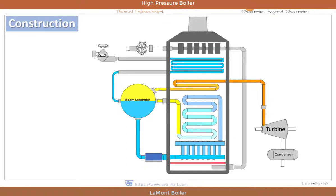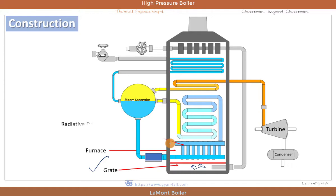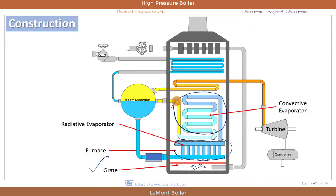Now let us understand the most important parts of the Lamont boiler. This is the grate on which the fuel is placed for burning, and the hot air is supplied from the bottom of the grate. This is the furnace where the fuel is burned and hot gas of combustion goes up and is dispersed to the atmosphere through the chimney. The first water tubes are the radiant evaporator, and next are the convective evaporator. Steam from the convective evaporator enters into the steam separating drum, which contains both water and steam. Water from the steam separating drum enters into the radiant evaporator through the circulating pump.